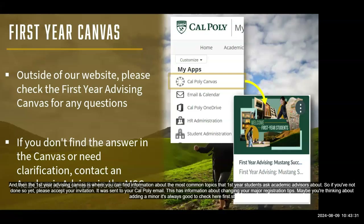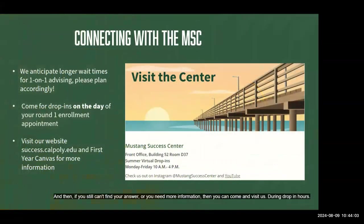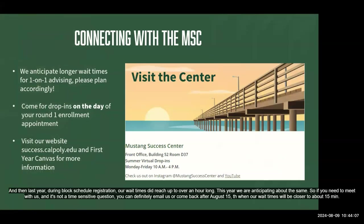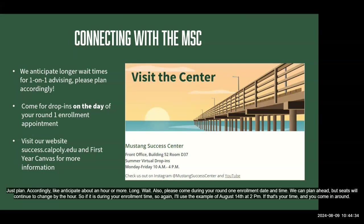The First Year Advising Canvas has information on the most common topics first-year students ask advisors about — changing your major, registration tips, adding a minor, and more. Accept your invitation sent to your Cal Poly email. Check there first, and if you still need help, visit us during drop-in hours. Note: during block schedule registration, wait times can exceed one hour. After August 15th, wait times drop to about 15 minutes.